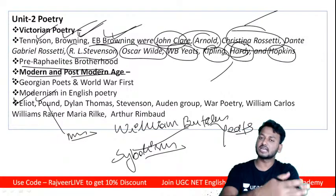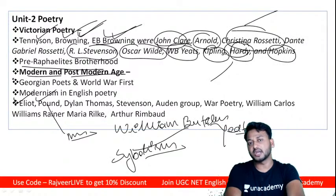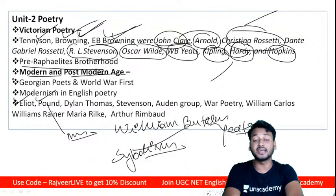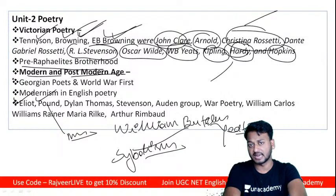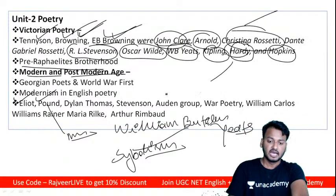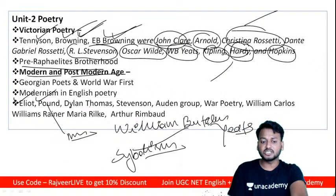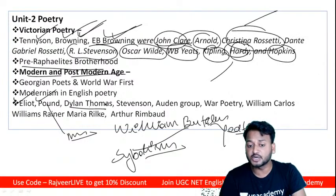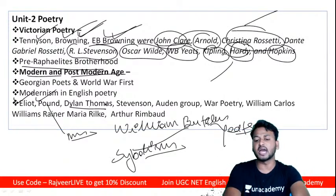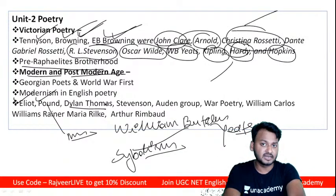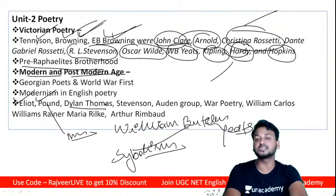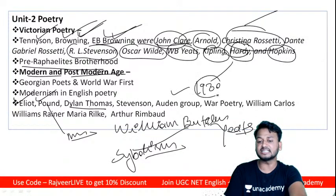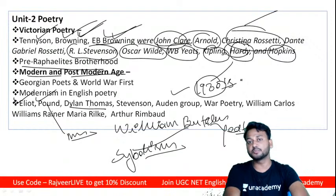Dylan Thomas is an important modern poet. The Auden Group — also known as the 1930s Group — includes W.H. Auden, Louis MacNeice, and others. Please cover the Auden Group carefully.